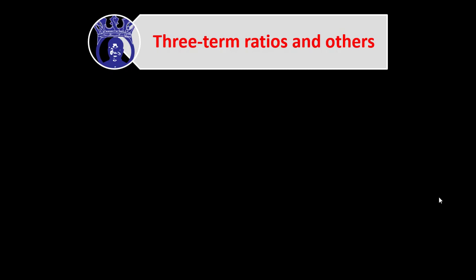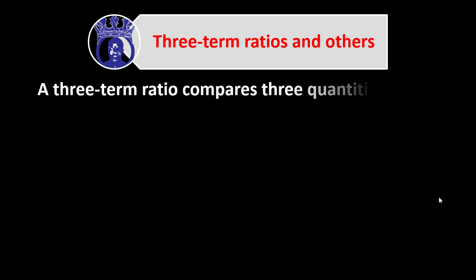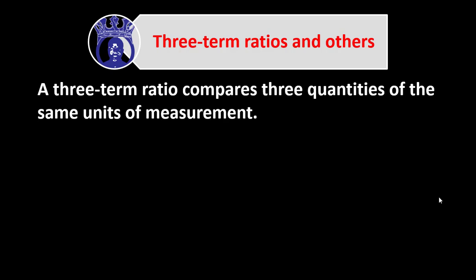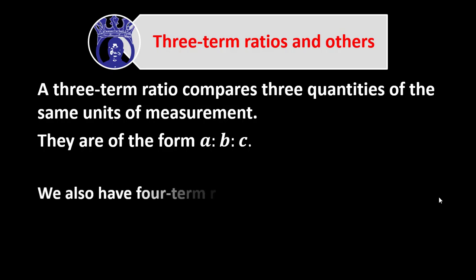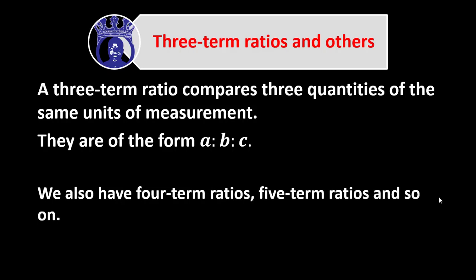A three-term ratio compares three quantities of the same units of measurement. They are of the form A to B to C, where A, B, and C are counting numbers. Note that we don't have negative numbers as parts of ratios because it doesn't make sense — we are comparing quantities, mostly scalar quantities, not vector quantities. We also have four-term ratios, five-term ratios, and so on.